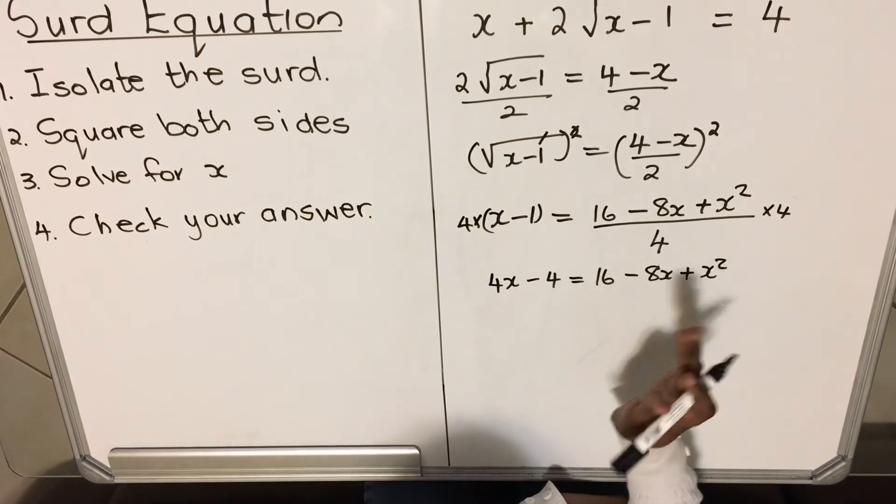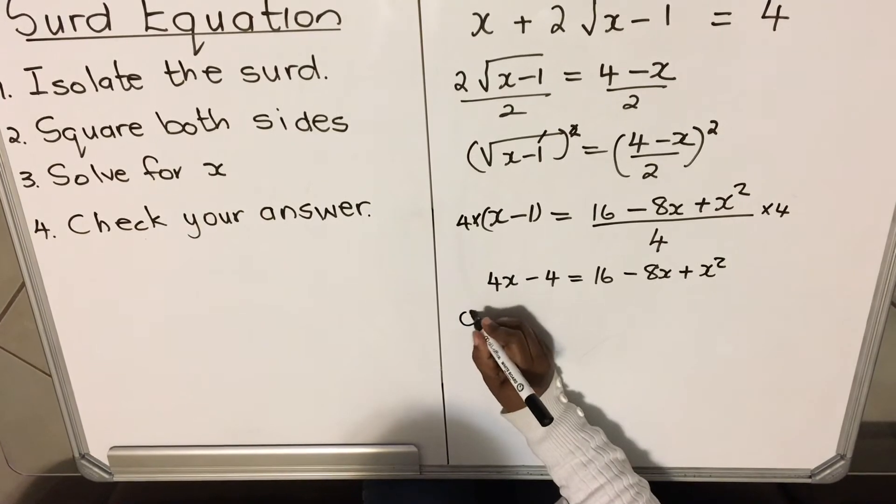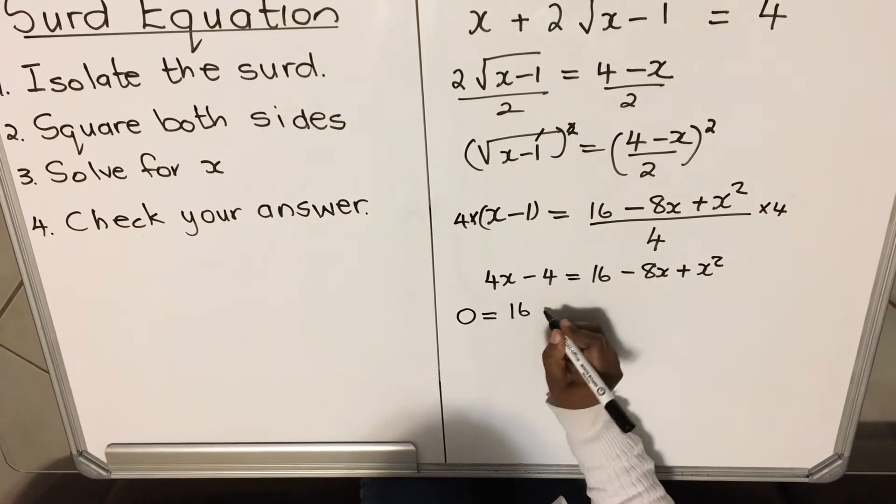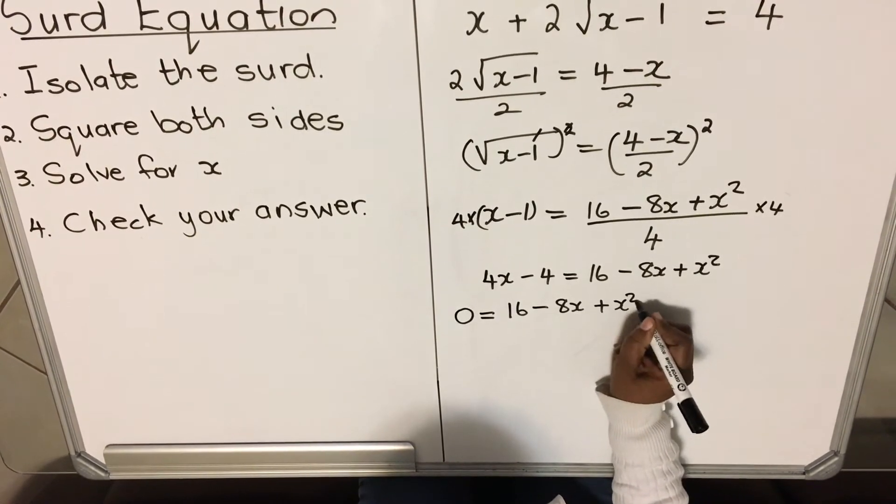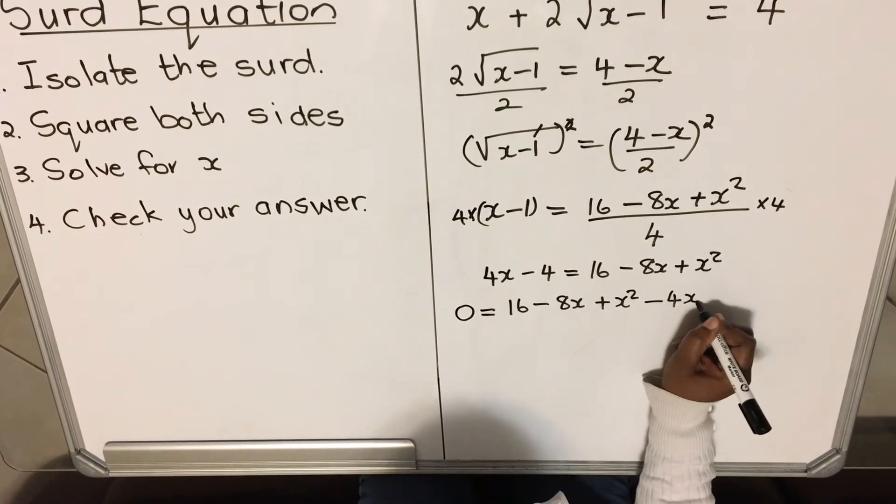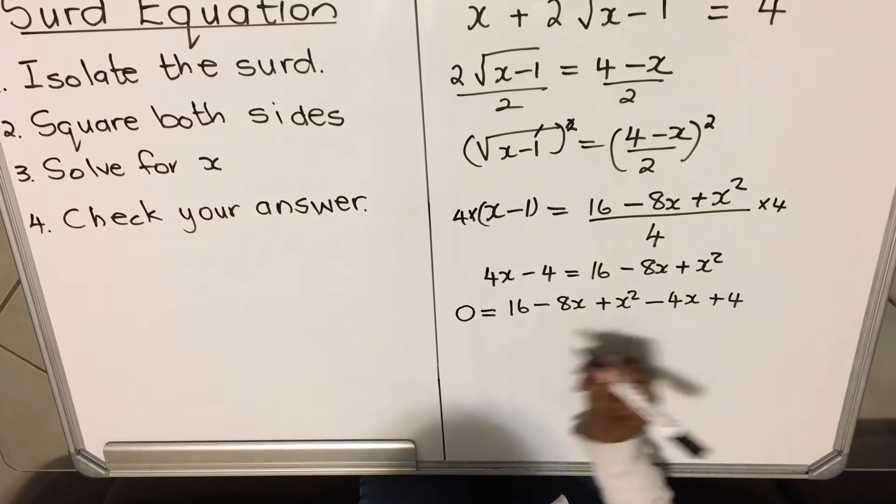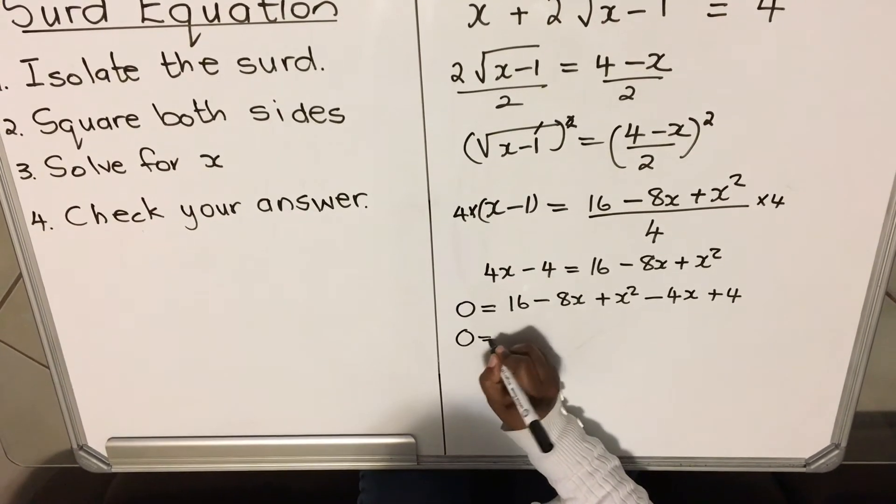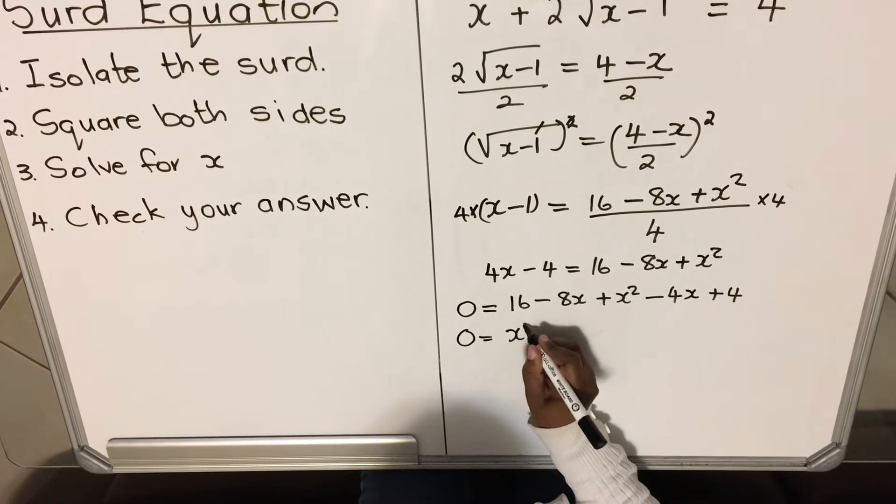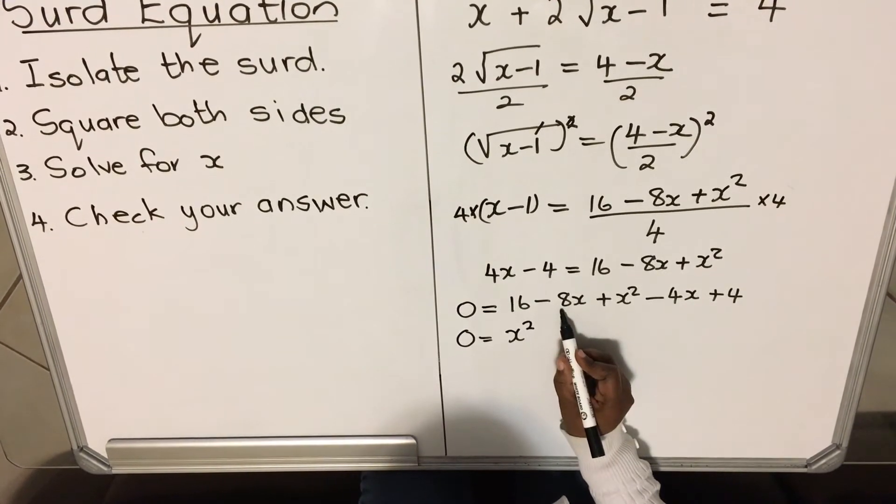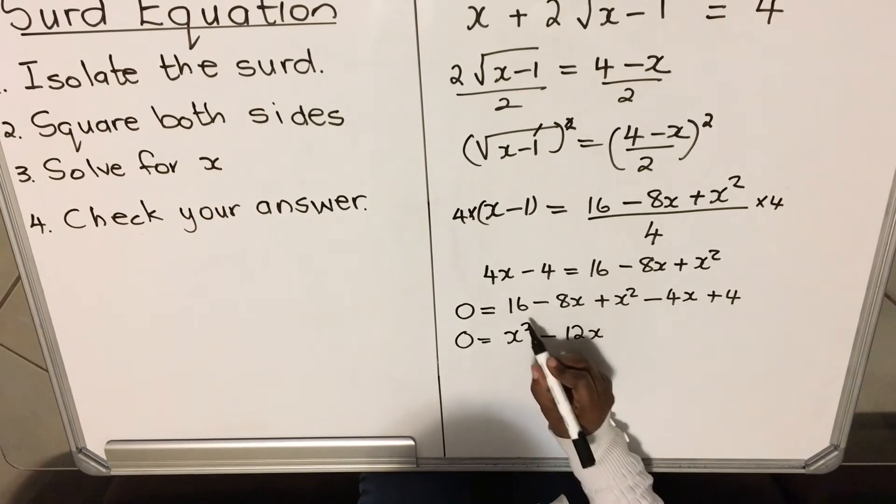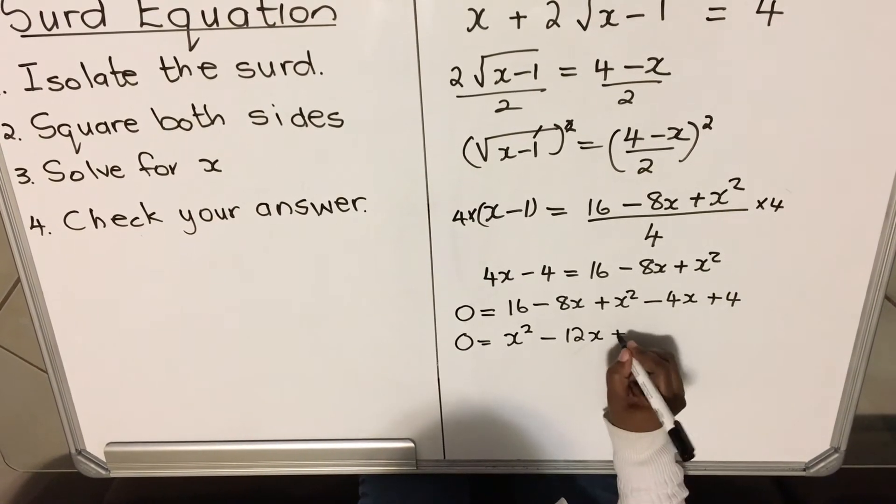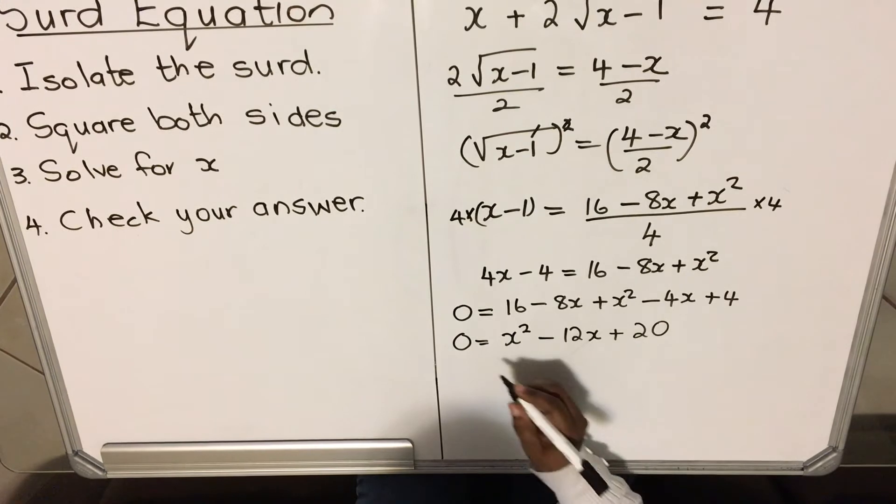Then I take everything to this side. Zero equals 16 - 8x + x² - 4x + 4. Zero equals, I'm going to start with x². I'm writing a trinomial now. This one and that one combined will give me -12x, and then the 16 and the 4 give me 20. Then I factorize.